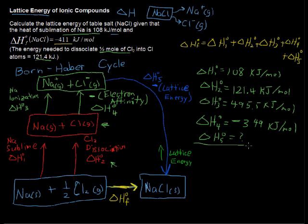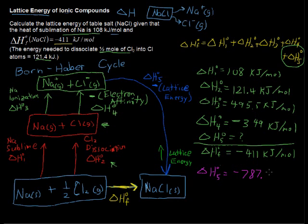We also have ΔH sub 5—we don't know what that is. Add all those up, and that should equal the heat of formation, which is given to us as negative 411 kilojoules per mole. All you have to do is solve for the unknown there. So you get ΔH sub 5 equals negative 787.3 kilojoules per mole.